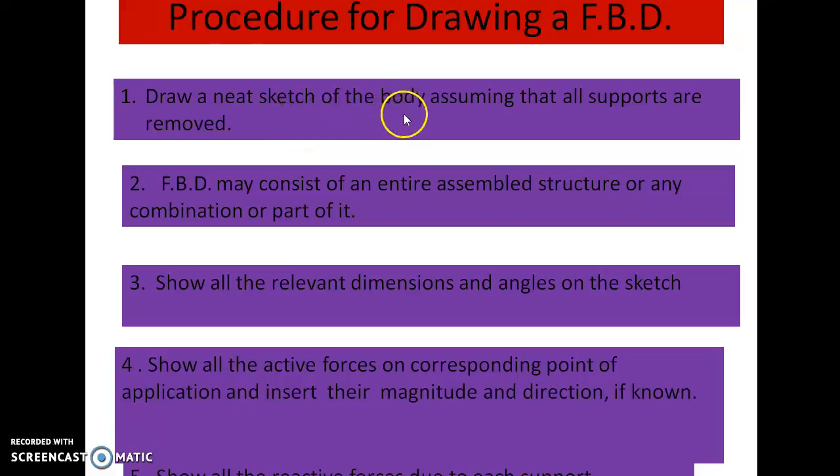Procedure for drawing a free body diagram: One, draw a neat sketch of the body assuming that all supports are removed. Second, FBD may consist of an entire assembled structure or any combination part of it. Thoroughly show all the relevant dimensions and angles on the sketch.